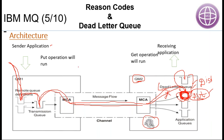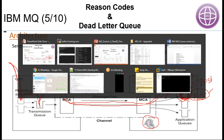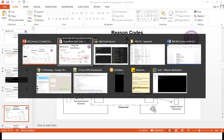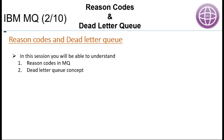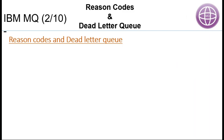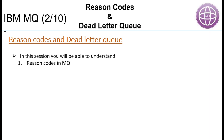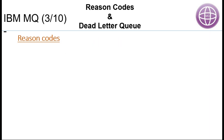When there is a problem in the receiving queue and a dead letter queue is not assigned, these messages will be getting vanished. Now what we are going to do is create a dead letter queue and try to put the message again to see what happens. In this session we are going to understand about reason codes and dead letter queue.